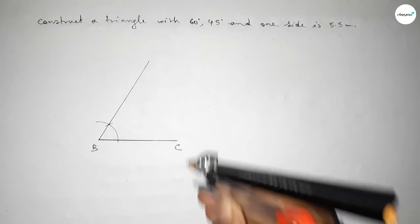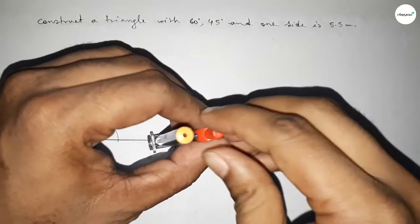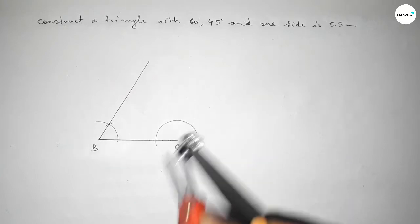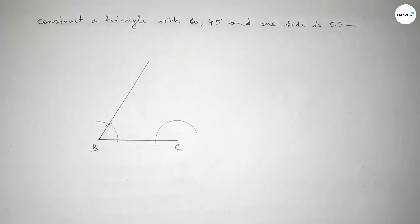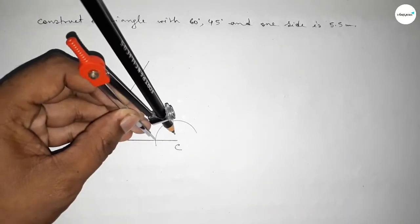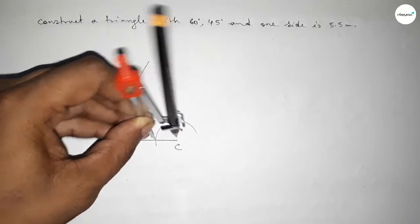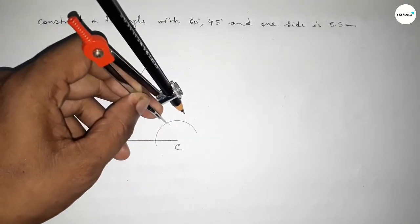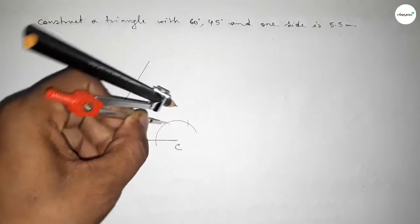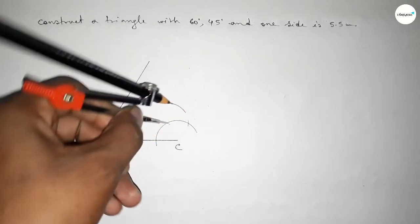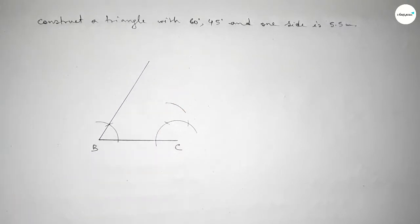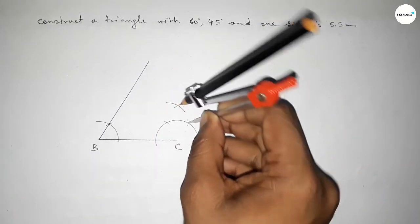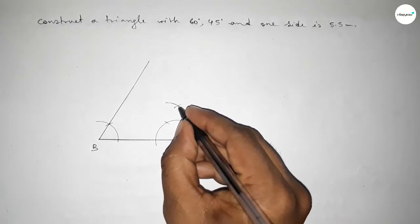Next we have to draw a 45 degree angle at point C. Putting the compass at C and drawing an arc, then putting the compass at that arc point with the same length and cutting here. Putting the compass again and drawing another arc with the same length.